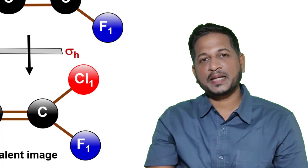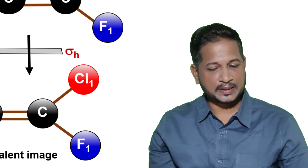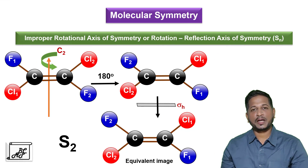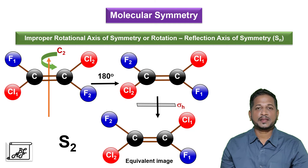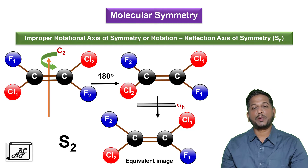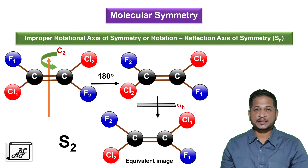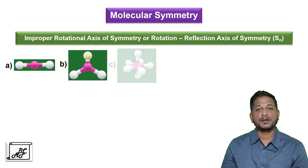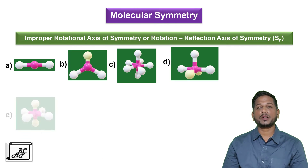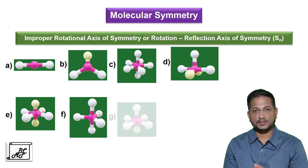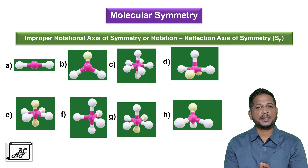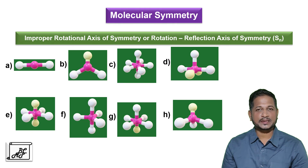This is another S2 rotational axis of symmetry. So in dichlorodifluoroethylene molecule, there are two improper rotational axis of symmetry. Now on the screen you can see eight examples and you have to tell me which improper rotational axis of symmetry is present in these examples. Mention your answers in the comment box.